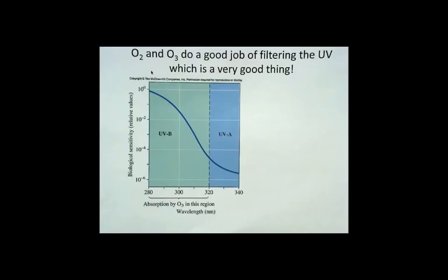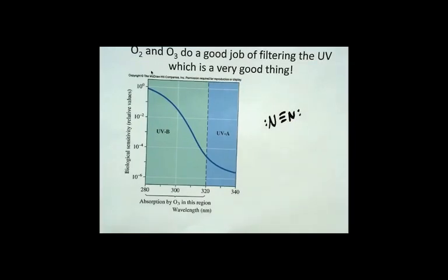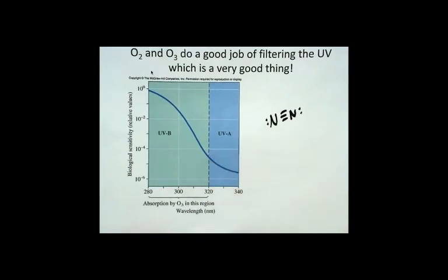The reason oxygen gets most of the UVC is because oxygen is the second most abundant gas in the atmosphere. The first most abundant gas in the atmosphere, which we haven't mentioned yet, is nitrogen. And nitrogen doesn't do a good job of filtering UVB or UVA because nitrogen is held together by a triple bond, which is an even stronger bond — way too strong to be broken by UVA or UVB.